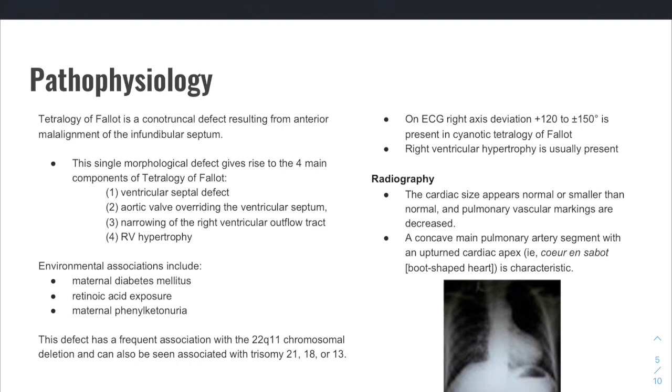Tetralogy of Fallot is a conal truncal defect resulting from anterior malalignment of the infundibular septum. So this falls into the category of congenital heart disease. This morphology or the disease or the pathology that we call Tetralogy of Fallot is actually really four. It has four components, and those components are listed out here.